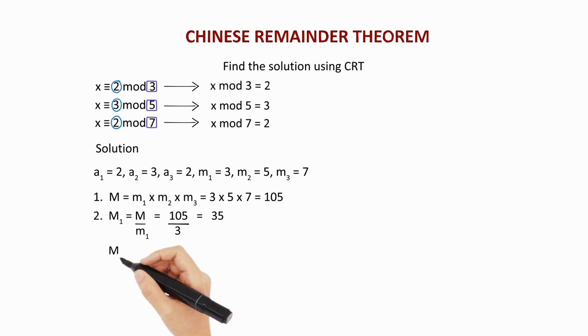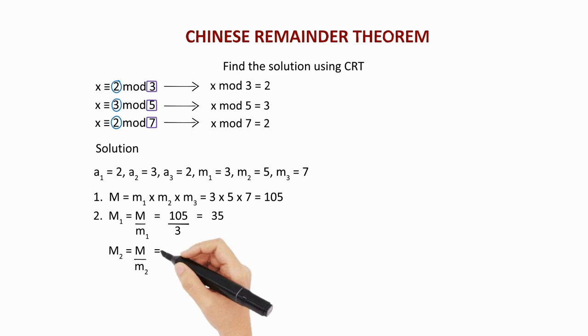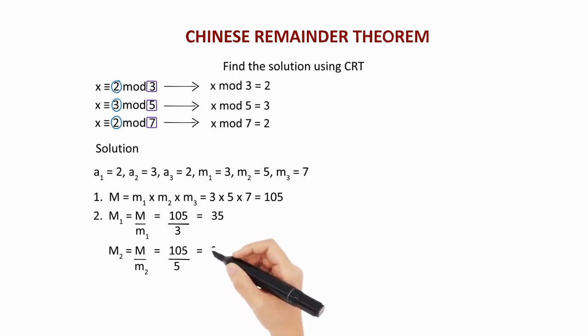Capital M2 is capital M divided by m2, which is 105 divided by 5, giving you the answer as 21.